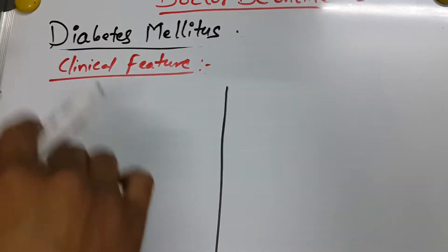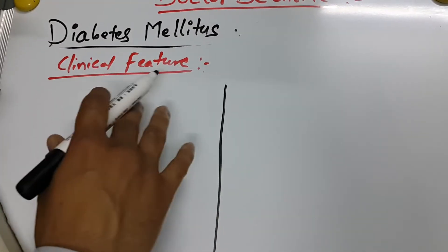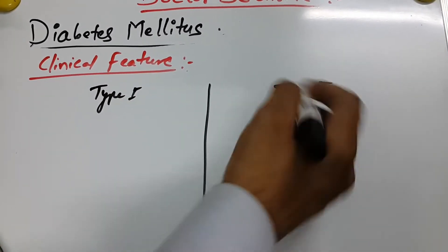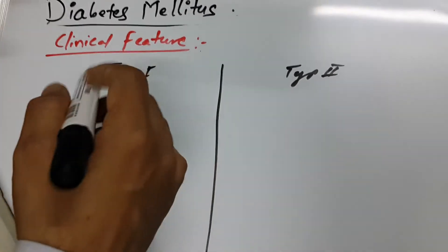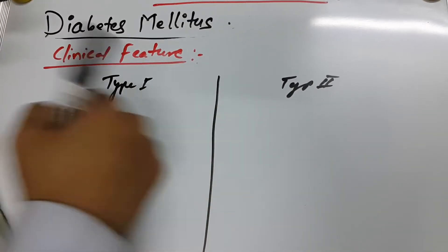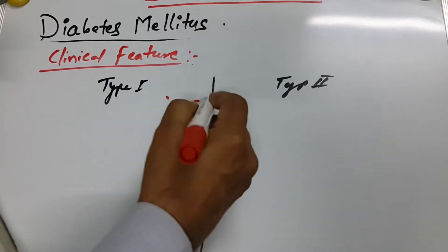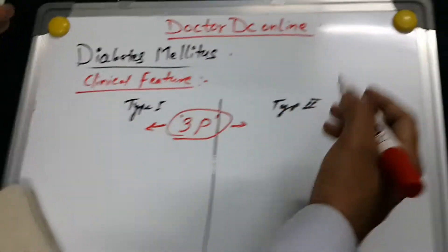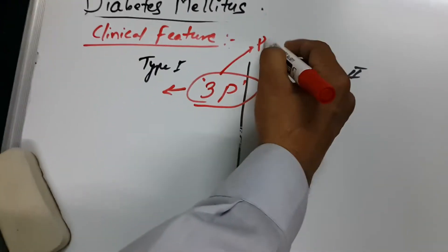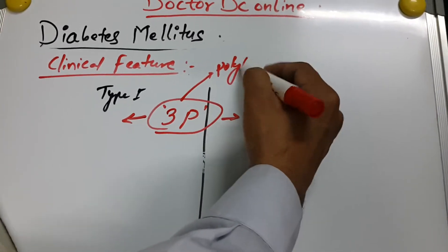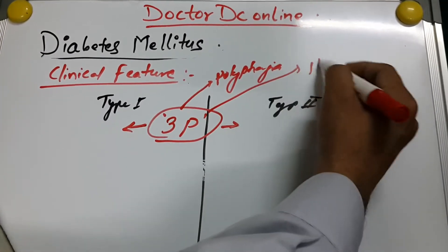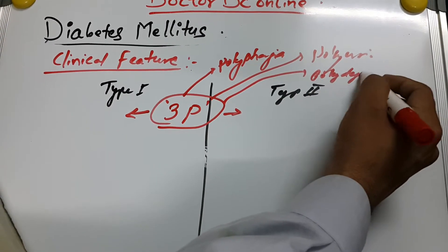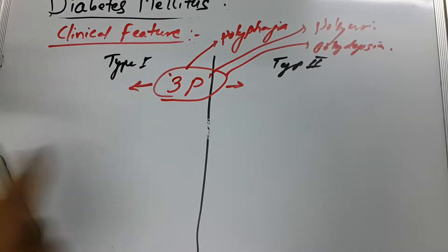Now, diabetes mellitus clinical features. I want to describe clinical features separately for Type 1 and Type 2. As I already mentioned in the previous pathophysiology video, we already discovered the 3P. This 3P applies in both cases — in Type 1 patients and also in Type 2 patients. The 3P refers to polyphagia, polyuria, and polydipsia.